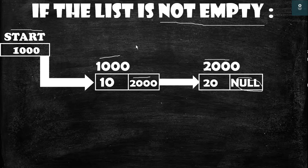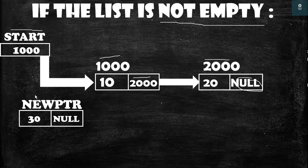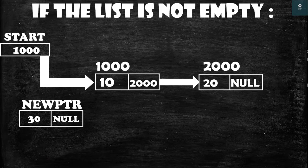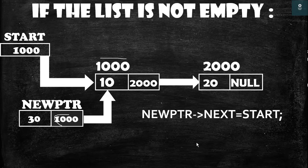After this, we create the node to insert into the linked list. This is the new node and newptr is a pointer having the address of this node, with null stored in its pointer field. After creating the node, we make newptr's pointer point to the first node, so newptr's pointer is now having the address of the first node.